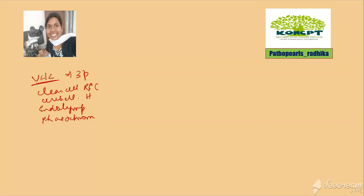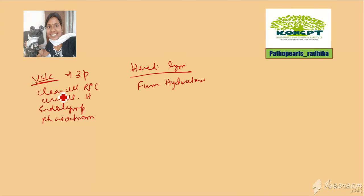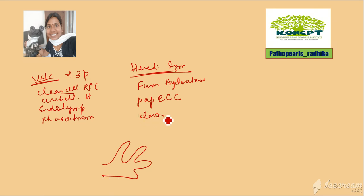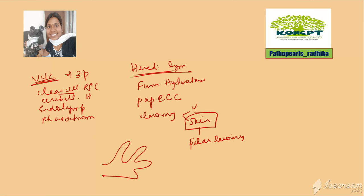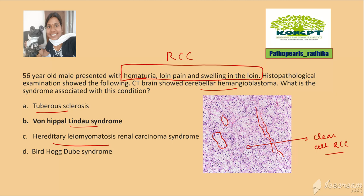Going to the next option: hereditary leiomyomatosis RCC syndrome. This is associated with mutation in the fumarate hydratase gene. VHL is associated with clear cell RCC, whereas hereditary leiomyomatosis RCC syndrome is associated with papillary RCC — you'll have papillary structures. In addition, they can have leiomyomas either of the uterus or in the skin. Leiomyomas in the skin, a smooth muscle tumor, are called pilar leiomyomas.